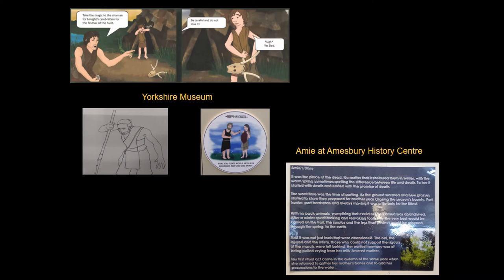At Amesbury Local History Centre, which is where the archaeological site on the Mesolithic is being presented — very close to Stonehenge — they've taken the name Amesbury and produced the character Amy, a young girl who appears in the displays at different points in history. Amy's story in the Mesolithic is narrated in the third person: Amy did this, Amy's parents did this, et cetera. So they have a named person that people can relate to as part of their understanding of the displays.